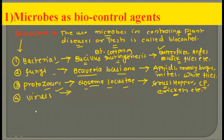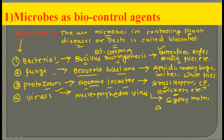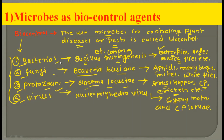Lastly we have virus. The example for virus is Nucleopolyhedrovirus. This Nucleopolyhedrovirus is able to avoid the development of gypsy moth and caterpillar larvae. So the four classes of organisms — bacteria, fungus, protozoa, and virus — are useful in biocontrol, which is the use of microbes for controlling plant diseases and pests in an agricultural field.